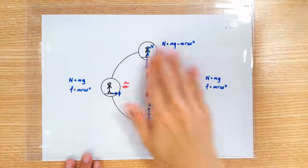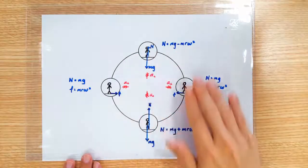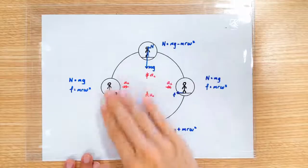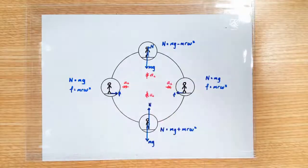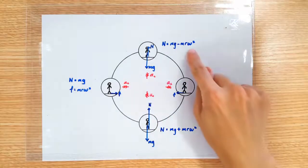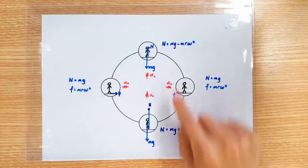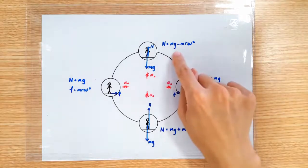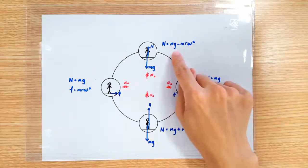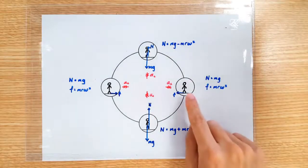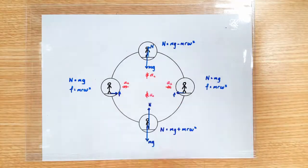Usually a ferris wheel rotates at a fairly slow rate, so the term mRω² is quite small. So the normal contact force really doesn't differ much from mg, and so this man doesn't really feel the effect.